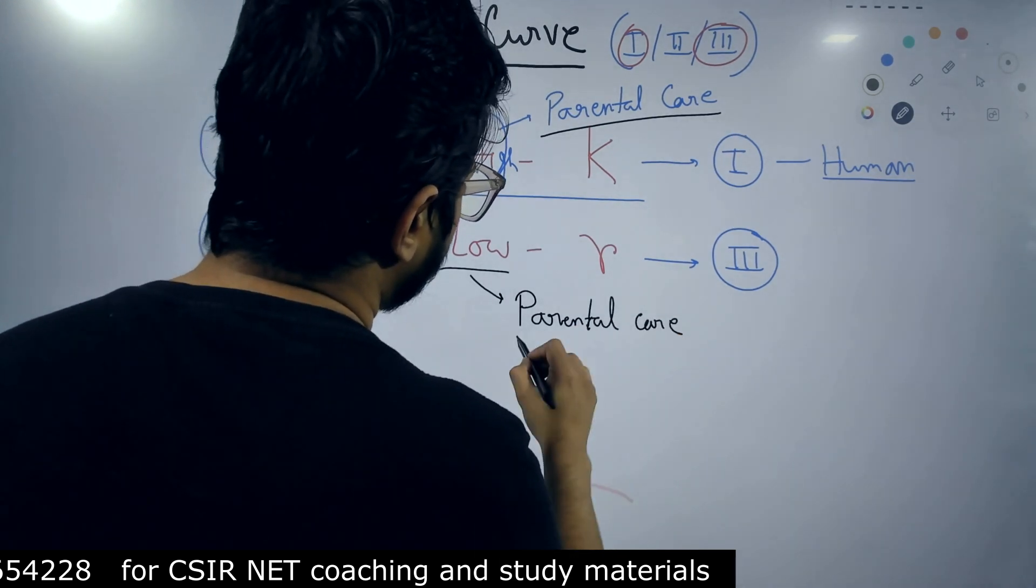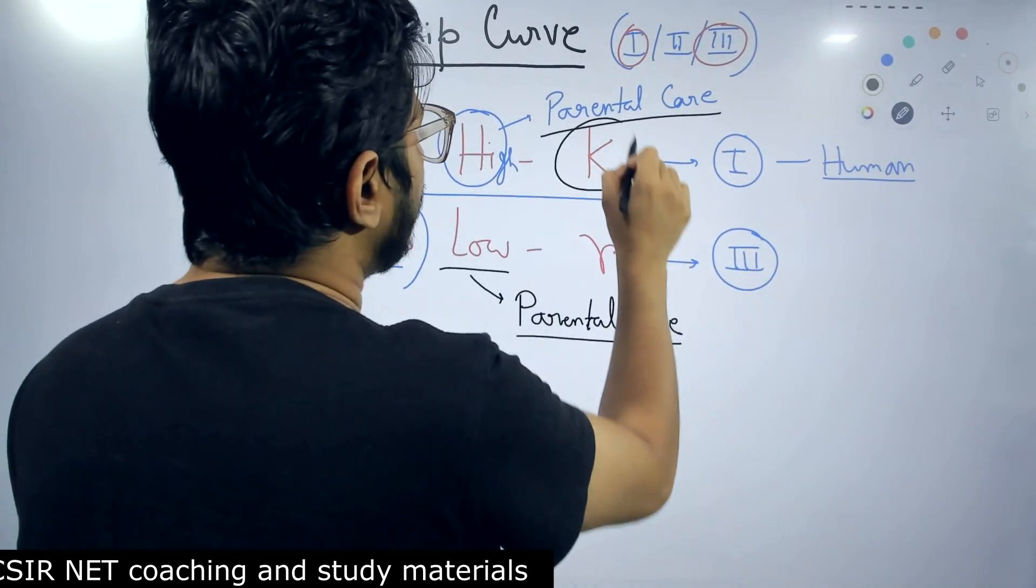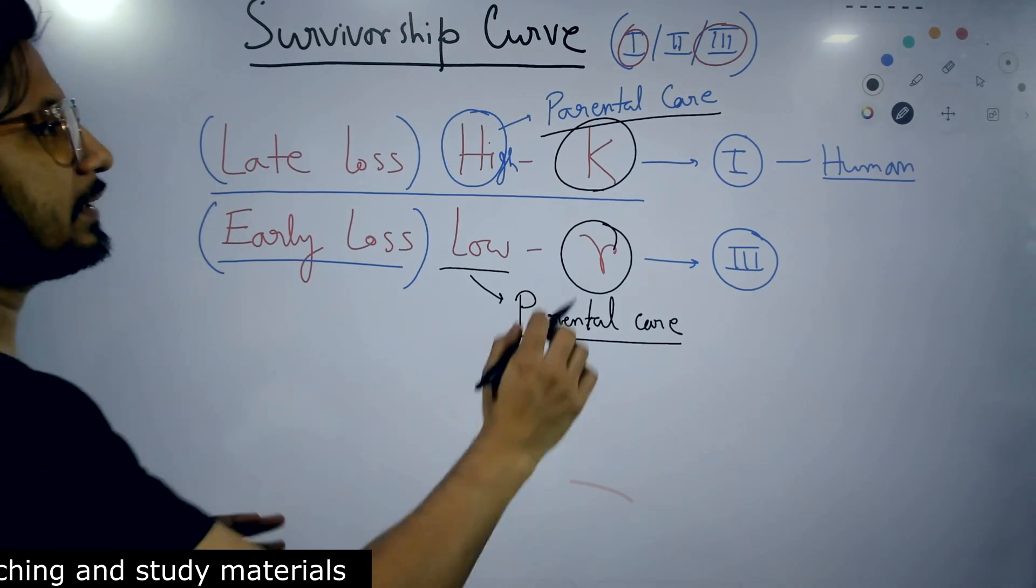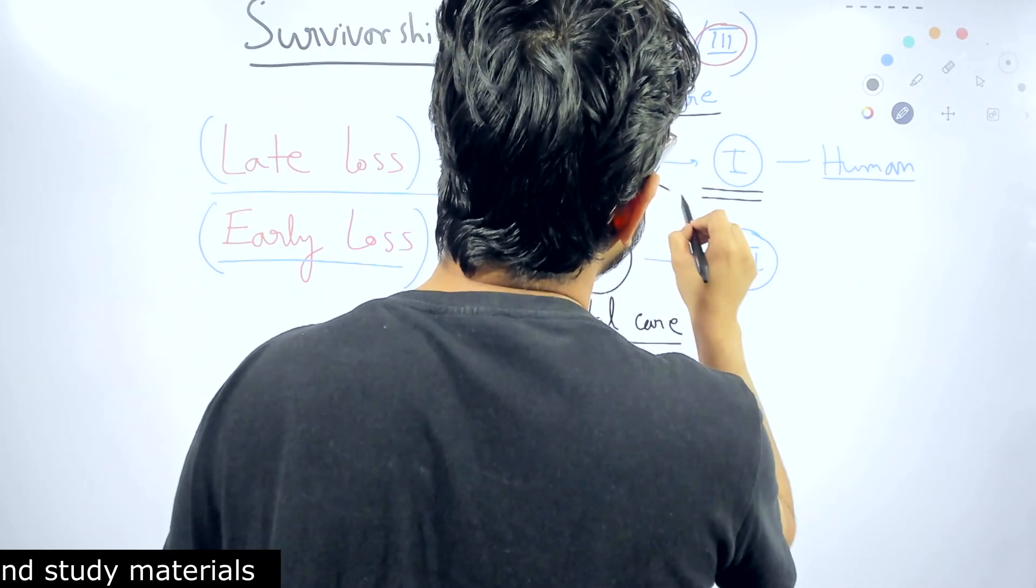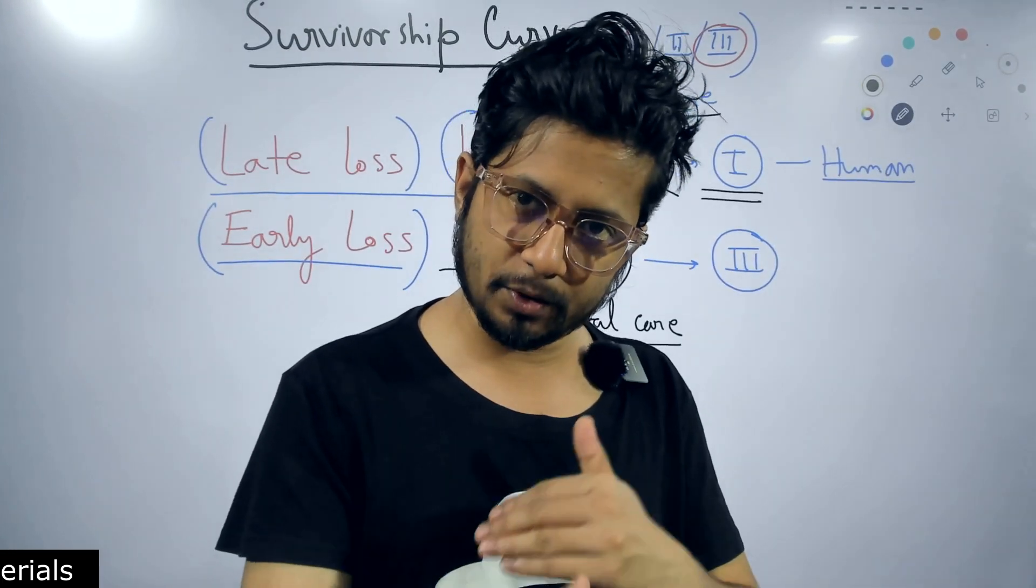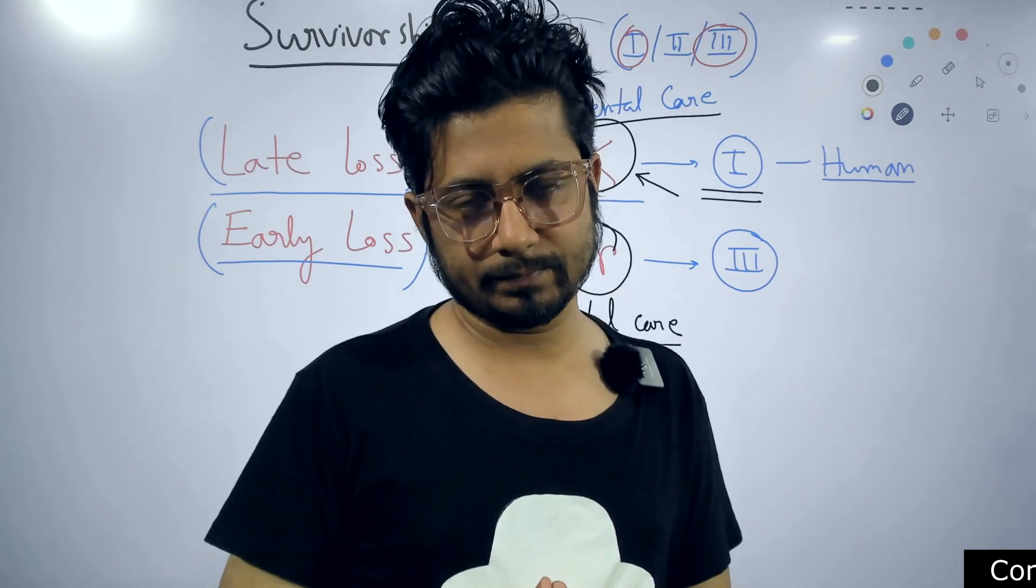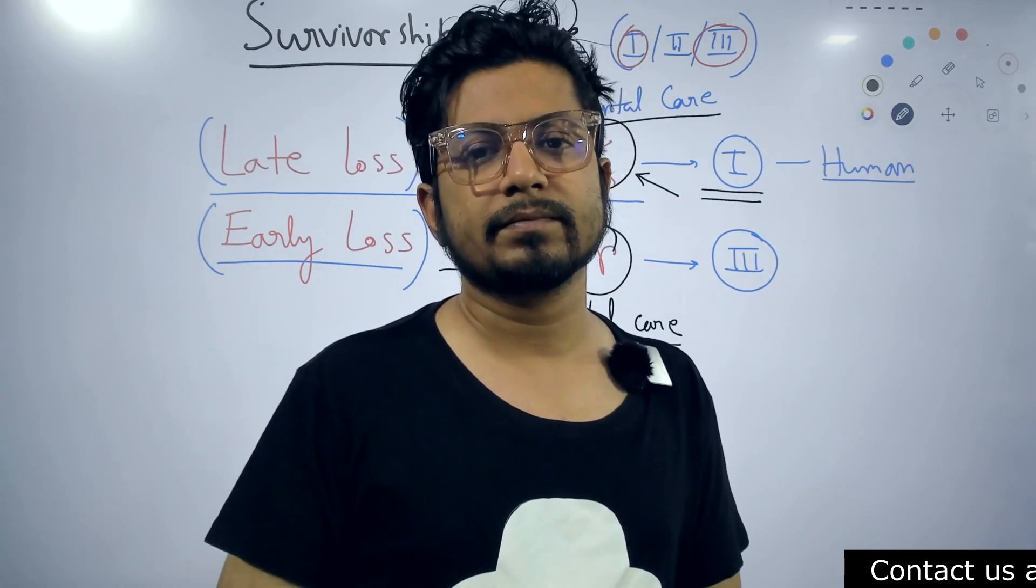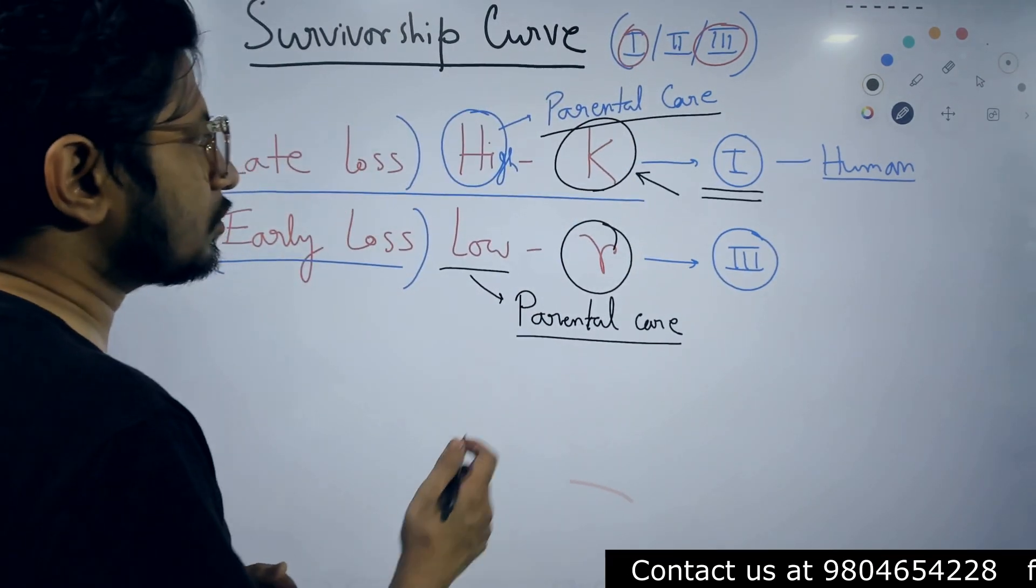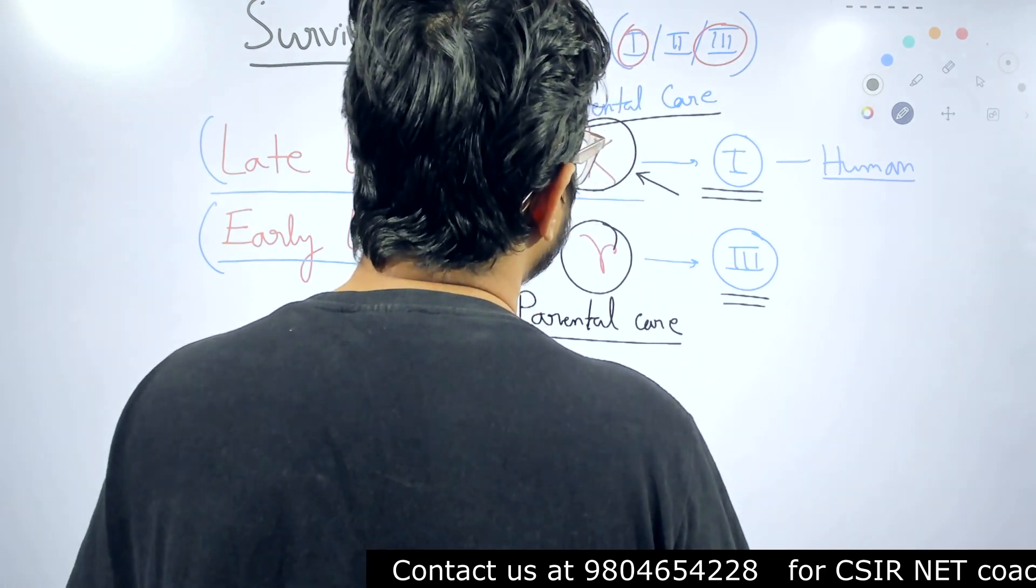And then K is what kind of species? K-selected species. This is R-selected species. So Type 1 survivorship curve individuals belong to K-selected species because they produce less offspring but reproduce multiple times. Their offspring size is bigger and they reach maximum age in their life due to parental care. Their population is governed by K selection.